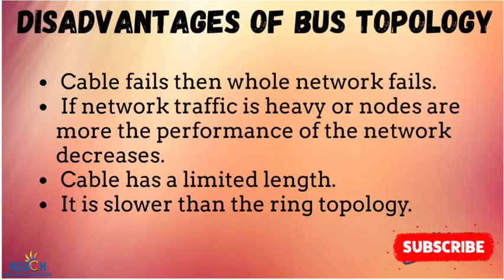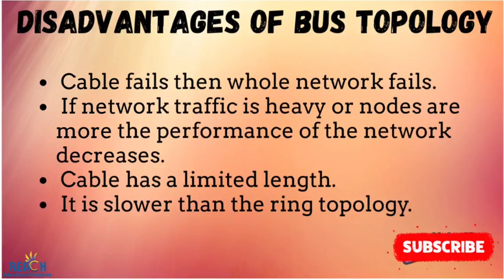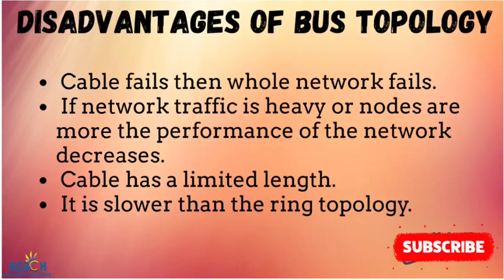Disadvantages of line or bus topology. One, if the cable fails, the whole network fails. Two, the performance of the network decreases when network traffic is heavy or nodes are more. Three, cables have a limited length. And four, it is slower than ring topology.